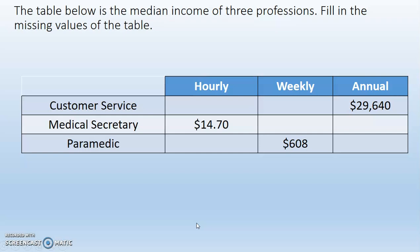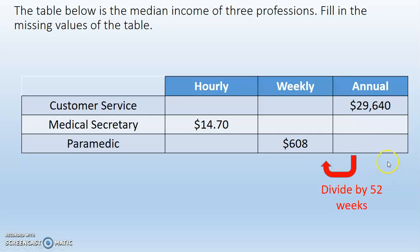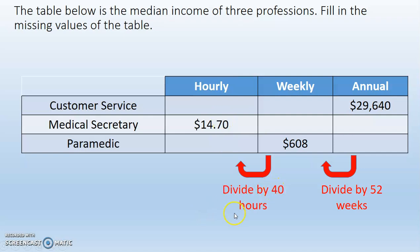Let's look at the table below. These are the median incomes for three professions — fill in the missing values of the table. To fill in the missing values, we have to figure out how to get from one value to the next. Going from annual to weekly, we divide by 52 weeks because there are 52 weeks in a year. Going from weekly to hourly, we divide by 40 hours, since there's typically a 40-hour work week for a full-time employee.